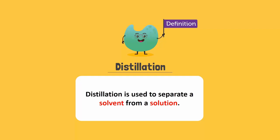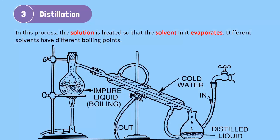Distillation is used to separate a solvent from a solution. In this process, the solution is heated so that the solvent in it evaporates. The dissolved solute particles are left behind. The vapour is then cooled to condense into liquid. This liquid is called distillate.